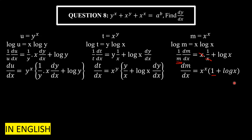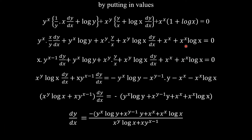Now coming back to the original equation: y^x + x^y + x^x = a^b. We differentiate both sides. The derivative of a^b is 0 because it is a constant. We have already calculated the derivatives of each of the three terms separately.